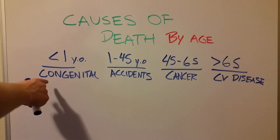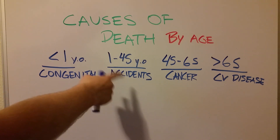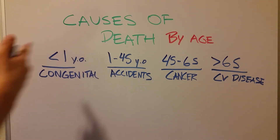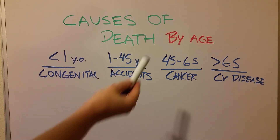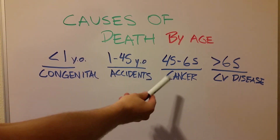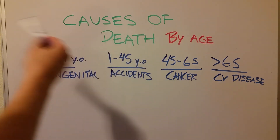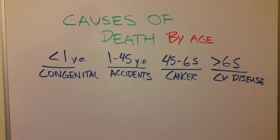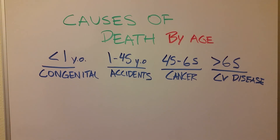To recap: congenital causes for less than one year old; accidents for all those young, healthy people from age 1 to 45; cancer — if it hits you, it's going to hit you between 45 and 65 typically; and above 65, cardiovascular disease, after all those lifetime decisions finally catch up with you. Those are the most common causes of death by age in America.